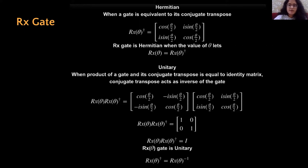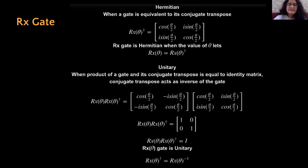Regarding Hermitian and unitary properties: the conjugate transpose of the RX gate is not the same as the RX gate itself, so whether it is Hermitian depends on the value of theta. For theta equal to pi it behaves as the X gate and should be Hermitian, but this is theta-dependent. However, no matter what the value of theta, multiplying the gate and its conjugate transpose always gives the identity matrix, so the RX gate is always unitary. The RX gate thus does a theta degree rotation about the X axis, and you can specify that theta in Qiskit.